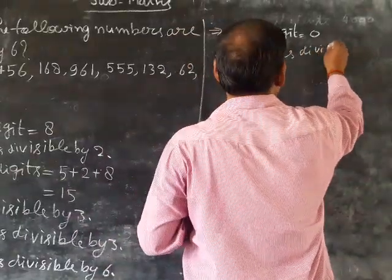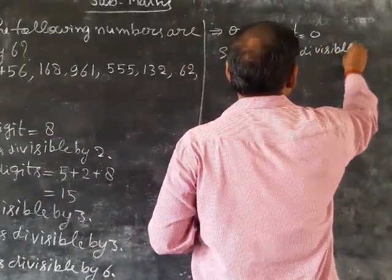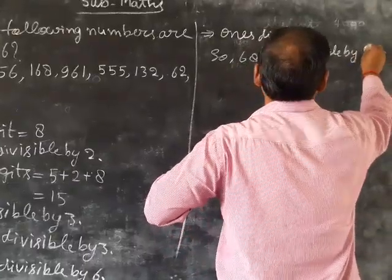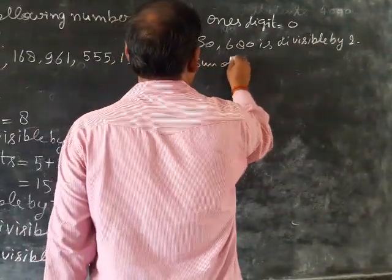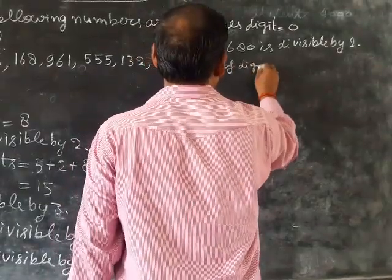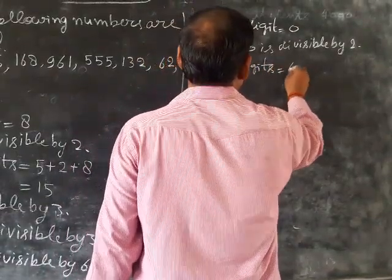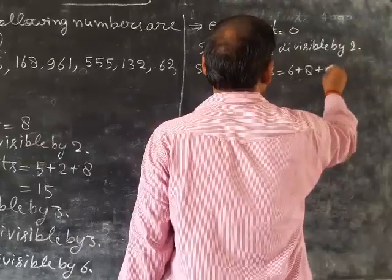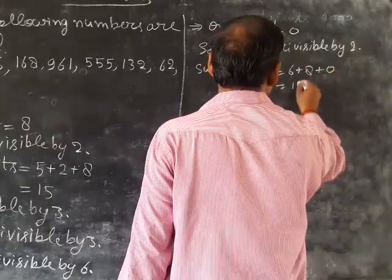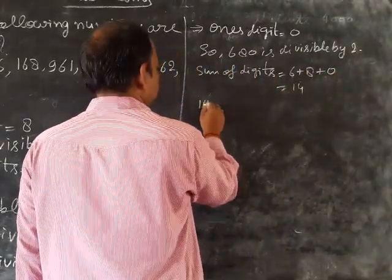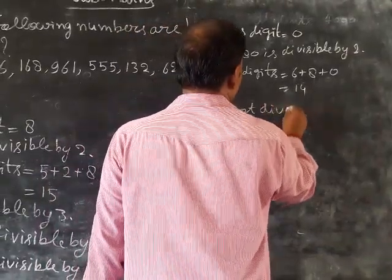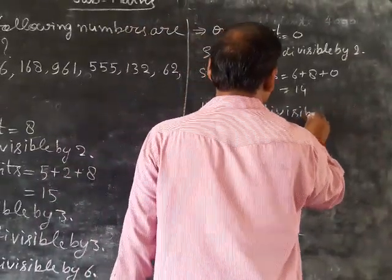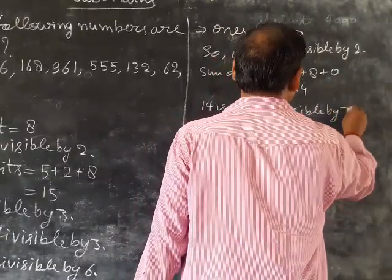Let me check sum of digits. 6 plus 8 plus 0 equals 14. 14 is not divisible by 3.